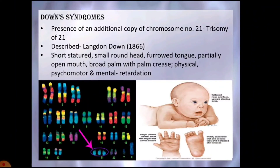Failure of cytokinesis after the telophase stage of cell division results in an increase in the whole set of chromosomes in an organism — this phenomenon is called polyploidy, due to an increase in entire haploid sets of chromosomes. When there are three haploid sets (3N), it is called triploid; four sets (4N) is tetraploid. Polyploidy is rare in animals but common in plants, and is associated with increased size, greater hardness, and increased resistance to diseases.